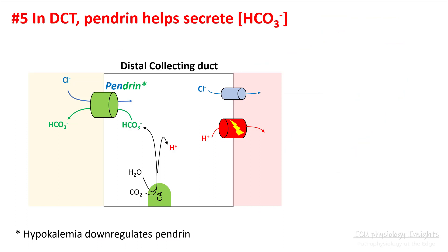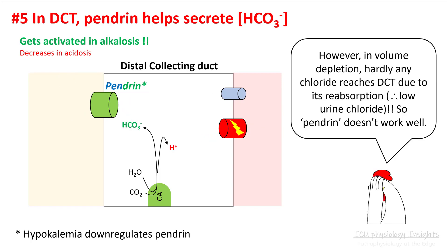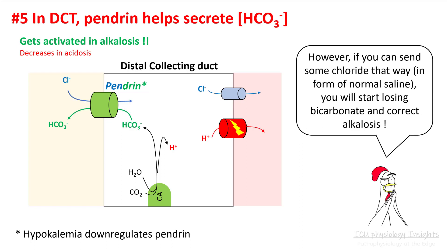In the distal convoluted tubule there is a protein called pendrin which helps secrete bicarb, and this is a chloride-bicarb exchanger. It gets activated in alkalosis; however it requires chloride to excrete your bicarb. In volume depletion, hardly any chloride reaches the DCT due to its massive reabsorption in the proximal tubules, so pendrin doesn't work well. However, if you give these patients chloride — for example as normal saline — you will stimulate this channel and this will improve your bicarbonate loss and improve your alkalosis.